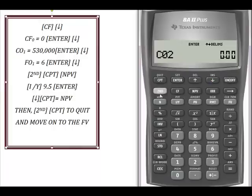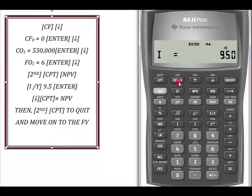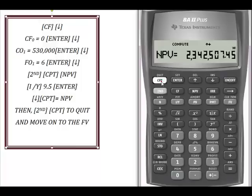I'm going to say second compute, and I want it to compute the net present value. When I hit second compute net present value, the first thing it wants is IY, so I'm going to hit 9.5 and enter, then down. You'll see it say compute — I'm going to hit compute, and it's going to give me the net present value of the wine department, which I'm going to write down because I need it to calculate the future value.